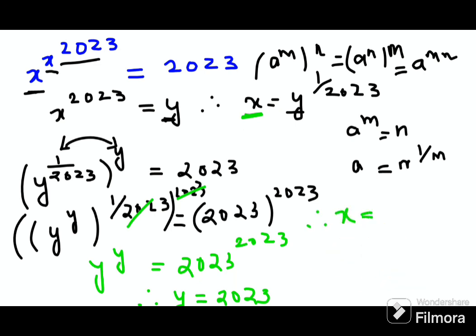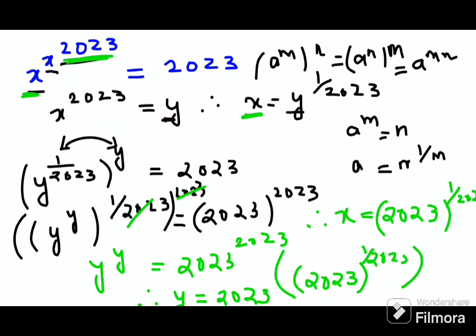Therefore I can say x is nothing but 2023, the whole raised to 1 upon 2023. Now if you want to substitute, we substitute this value over here. So this x is now 2023, the whole raised to 1 upon 2023, and this is getting multiplied by this 2023.